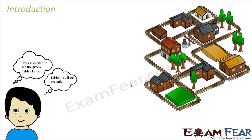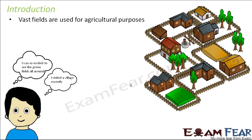Now do you know the significance of these vast green fields? What are they used for? How are those green fields useful to us — in fact useful to each and every human being? These vast green fields are used for agricultural purposes. Now you might be thinking: what do we mean by agriculture? So let us see what agriculture is.